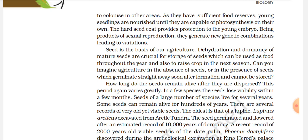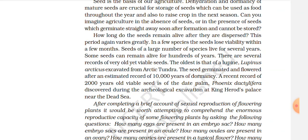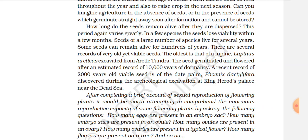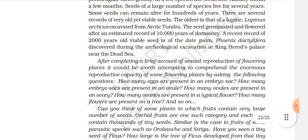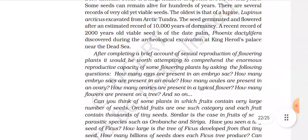Can you imagine agriculture in the absence of seeds? How long do seeds remain alive after they are dispersed? The period varies greatly — in a few species, seeds lose viability within a few months; seeds of a large number of species live for several years; some seeds can remain alive for hundreds of years. The oldest viable seed recorded is that of a lupine (Lupinus arcticus), excavated from arctic tundra — the seed germinated and flowered after an estimated 10,000 years of dormancy. A more recent record is that of 2,000-year-old viable seeds of date palm (Phoenix dactylifera), discovered during archaeological examination near the Dead Sea.